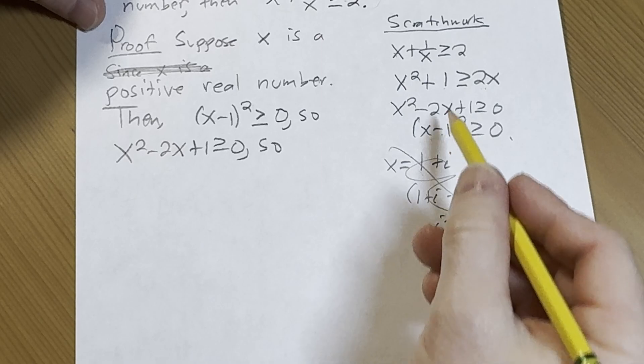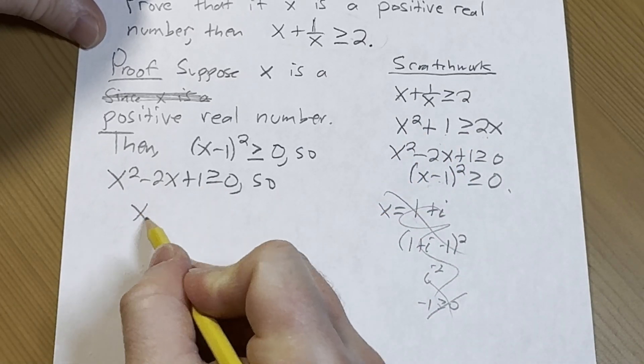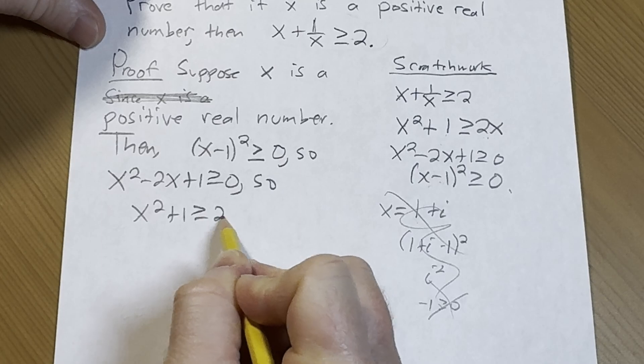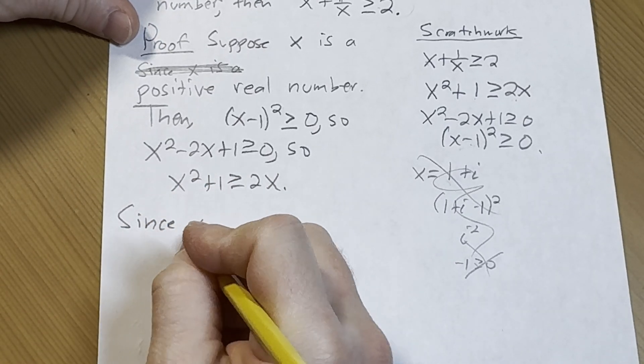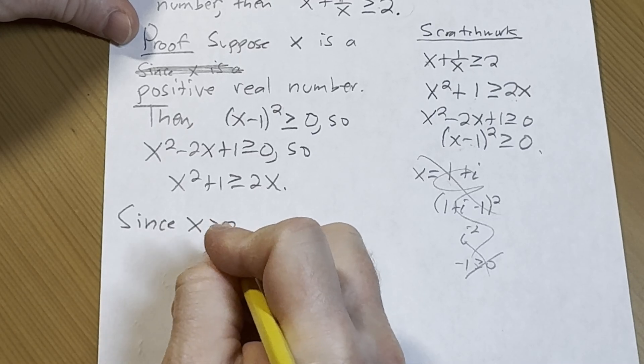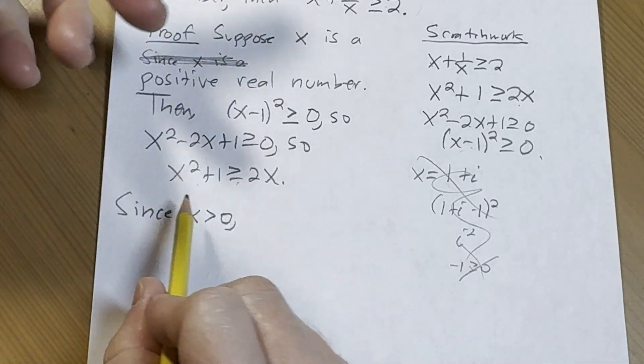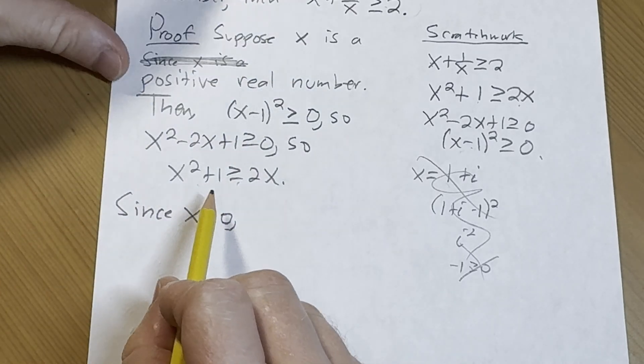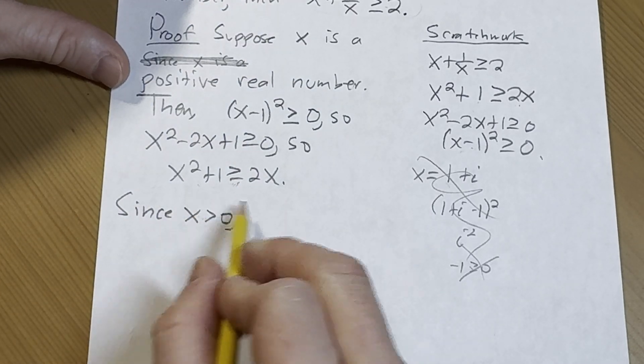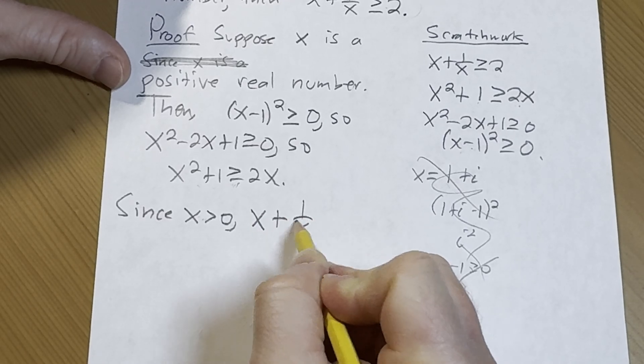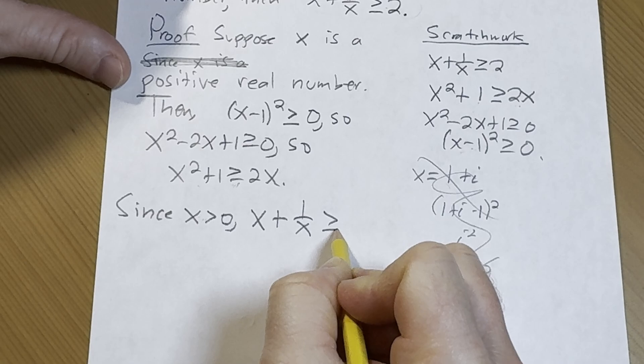And then, so we're just going to basically work backwards. So I'm just going to add over the 2x. Now check this out. Since x is positive, we can divide by x and we don't have to flip the inequality sign. Also, it's not zero, so we can divide by x. But remember, if it's negative and you divide, you have to reverse the inequality sign, right? But x is positive. So we just get x plus 1 over x greater than or equal to 2.